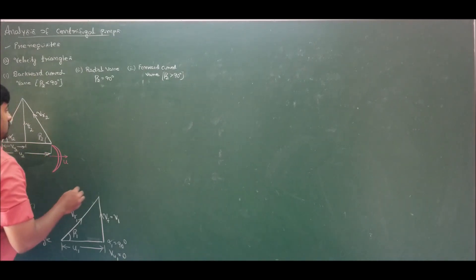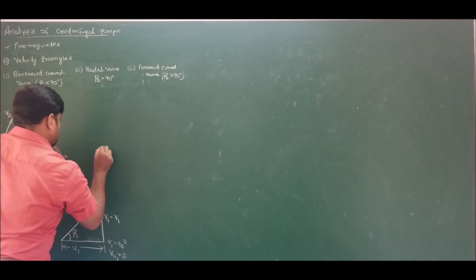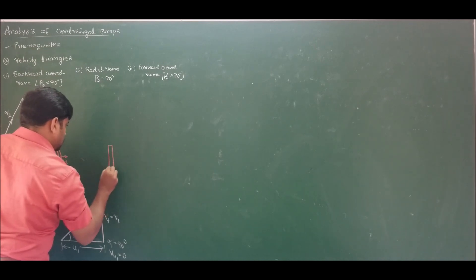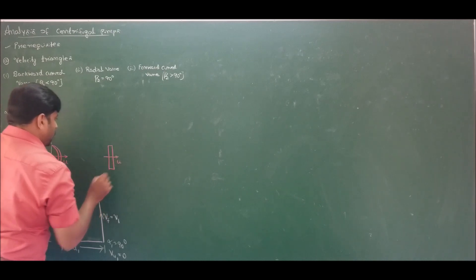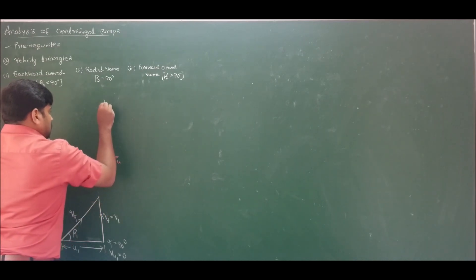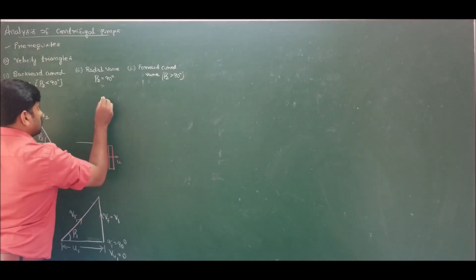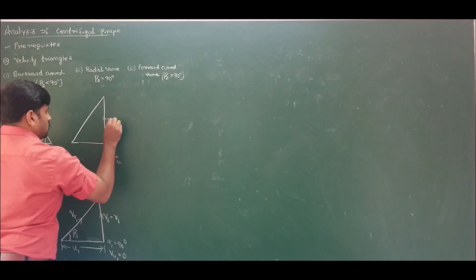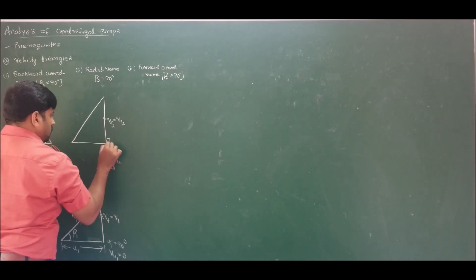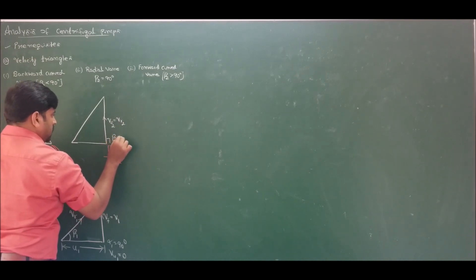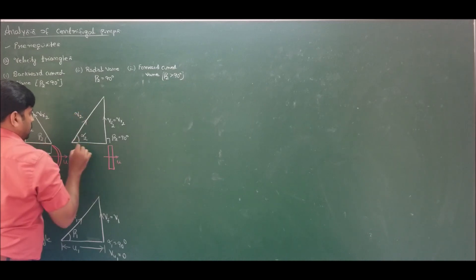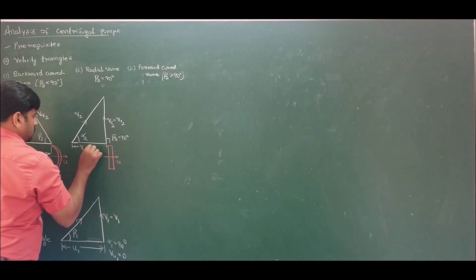Now coming to the radial vane, beta2 is equal to 90 degrees. For the radial vane, the velocity triangle at exit shows that Vf2 equals Vr2, since beta2 is 90 degrees. Here we have angle alpha2 and the absolute velocity V2. From the reference, we get Vu2 equal to U2.